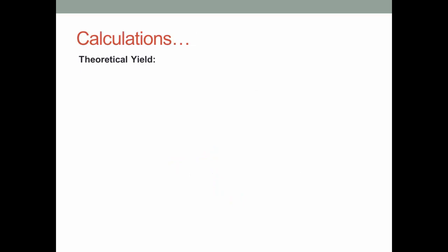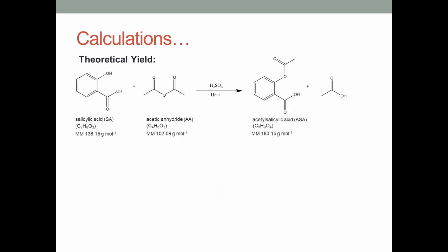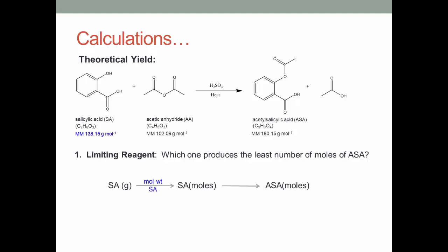Now some calculations must be done, starting with theoretical yield. In order to find your theoretical yield, you must first find your limiting reagent, which is the reagent which produces the least number of moles of ASA. To do this, start with your mass of salicylic acid. Then using its molecular weight of 131.15 grams per mole, you can get to the number of moles of salicylic acid. And using your mole ratio from the balanced equation above, you can get to the number of moles of ASA.